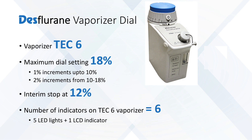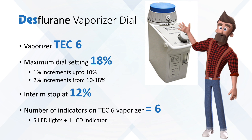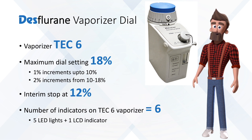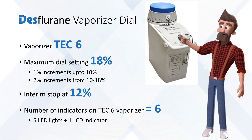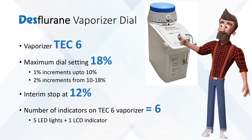Now we come to the vaporizer. The vaporizer for desflurane is the Tec 6. Looking into its features, the maximum dial setting is 18 — and 18 is 3 times 6. It also has an interim stop at 12%, and 12 is 2 times 6.